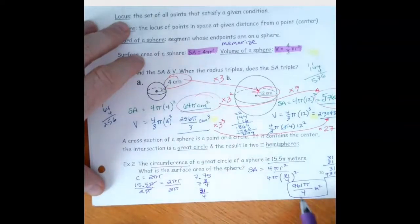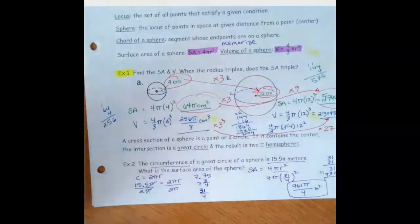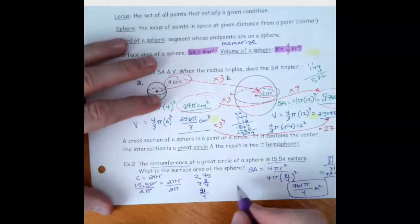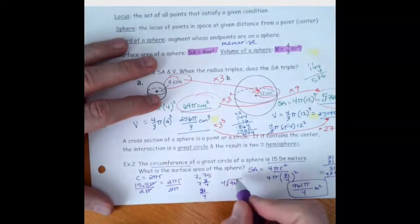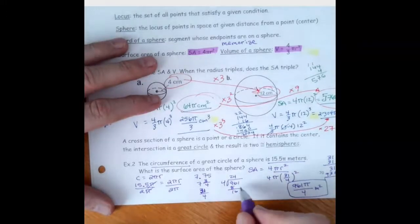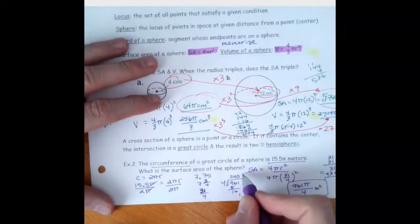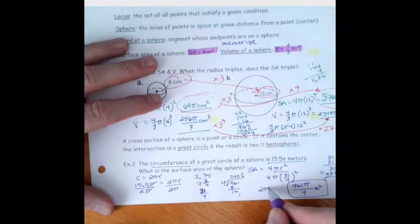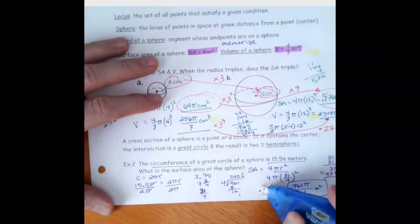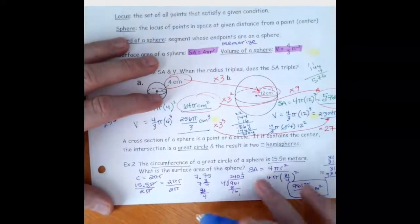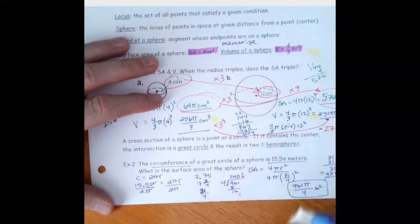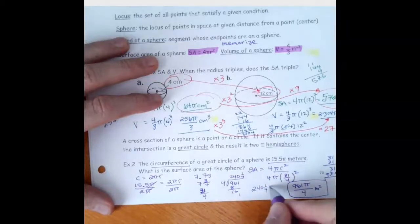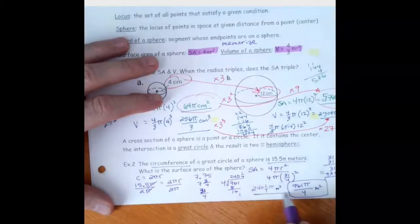Usually with something like that, we would break it down to a mixed number. So 961 divided by 4 is 240 with remainder 1, giving us 240 and 1/4 π meters squared.